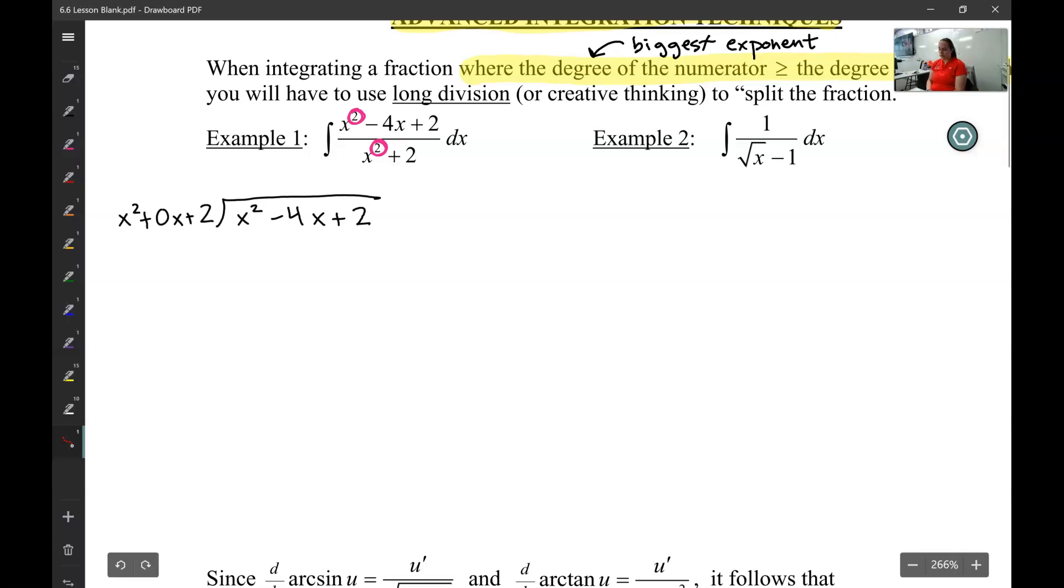Now, first step of long division is I compare the first term on the outside with the first term on the inside. And I think first term times what equals first term. So x squared times what equals x squared? Well, we know that's one.